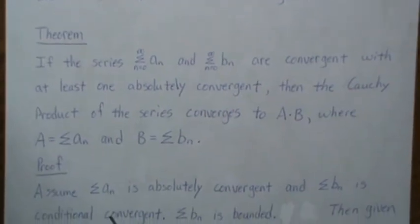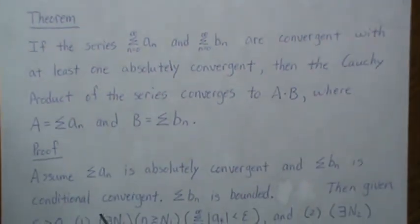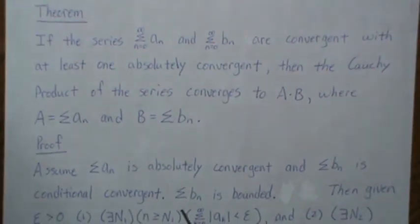So the proof goes like this. Assume AN is absolutely convergent and we'll assume BN is conditionally convergent. Since it's convergent we know that it's bounded, and that'll play a part later in the proof.